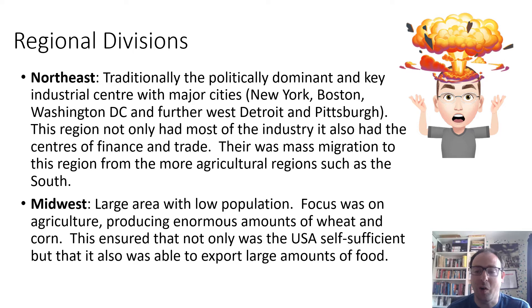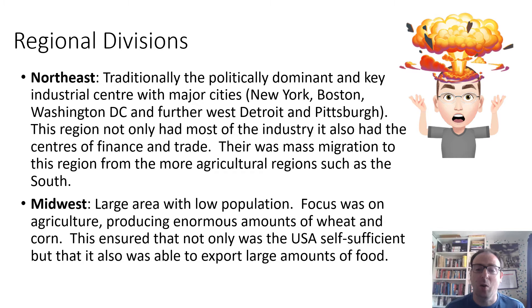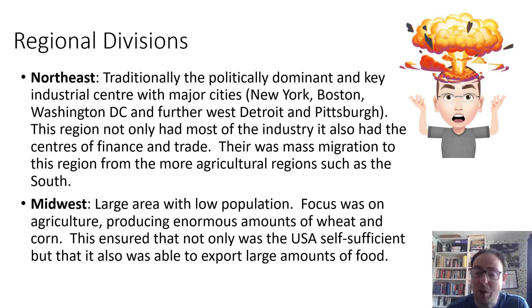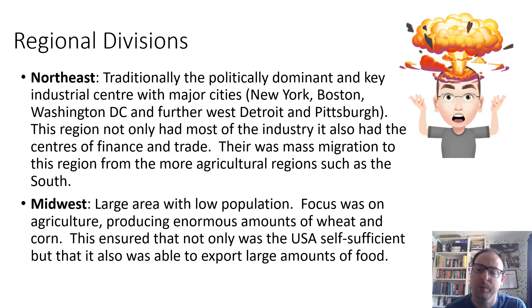Bordering the Northeast is the Midwest, a very large area spreading across the middle of America with a low level of population and no major cities like those in the Northeast. It focuses on agriculture and produces enormous amounts of food crops, in particular wheat and corn, but also rice and other food, along with huge amounts of meat production such as cattle. This ensured the USA was self-sufficient in food and had large amounts to export, making Midwest agriculture a key raw material for the country.